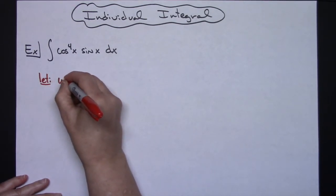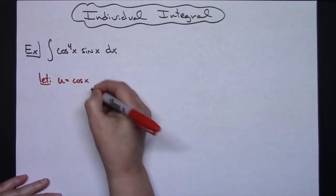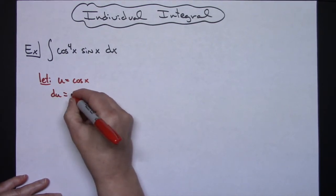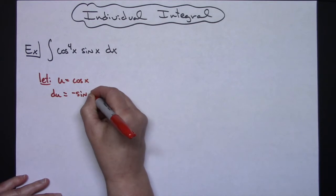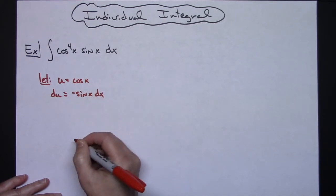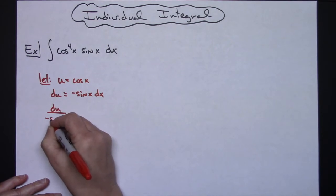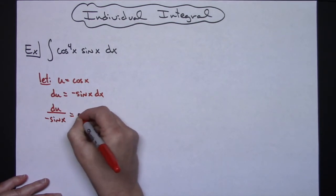So we're going to let u equal cosine of x. We're going to take the derivative of both sides. That will be du is equal to negative sine x dx. We'll go ahead and solve for dx. So we'll have a du over a negative sine x equaling our dx.